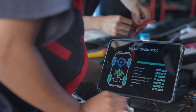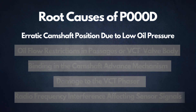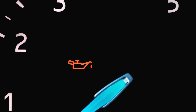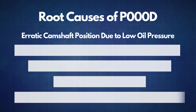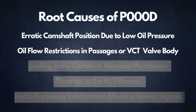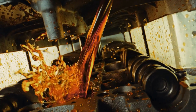If the P000D code reappears, it's time to look into some common root causes. The first cause is erratic camshaft position due to low oil pressure. Your camshaft's timing depends heavily on proper oil pressure — if the pressure is low, it can disrupt the camshaft's alignment, leading to the P000D code. The second cause is oil flow restrictions in passages or the VCT valve body. These restrictions could be due to sludge buildup or blockages in the oil lines, which can also interfere with camshaft timing.